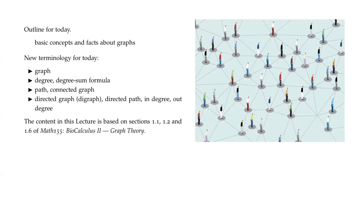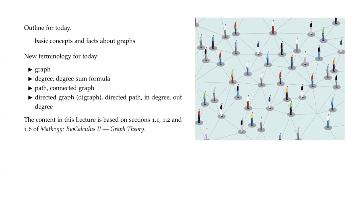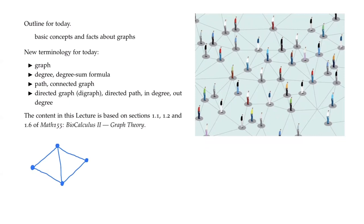Our graphs are used quite extensively in the life sciences. For example, if we are looking at the transmission of infectious diseases, we might want to represent those people in a population, or animals or plants, as these vertices or nodes, and the connections between them, or edges, can describe possible routes for transmission.